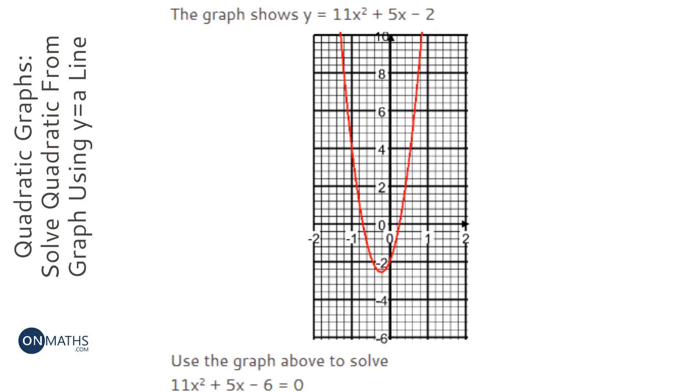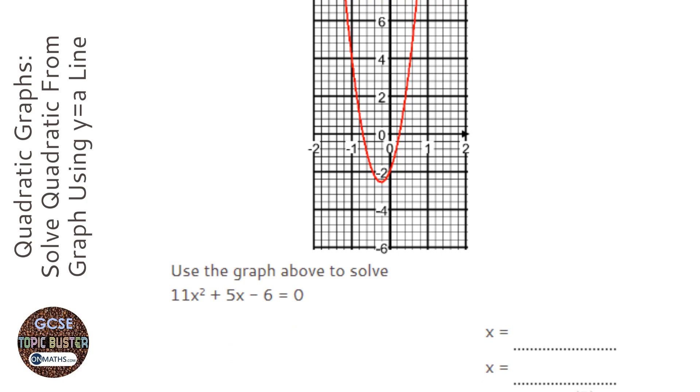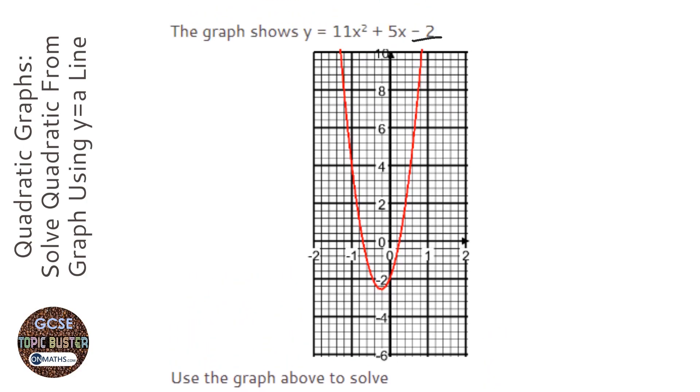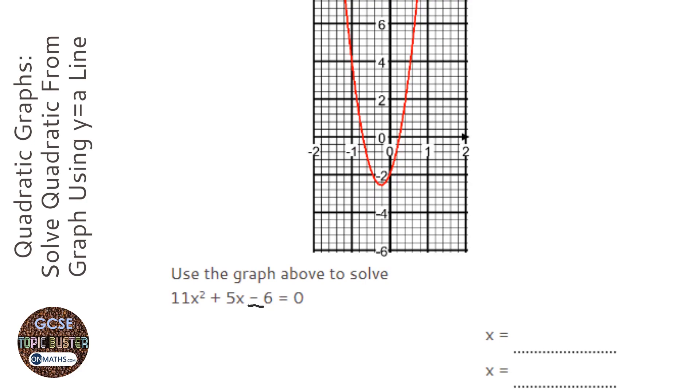Now it's not that easy to spot, but the graph we're given, the equation for the graph we're given, is not the same as the one we're asked to solve. If you have a look, there's a minus 2 at the end, and on this one there's a minus 6.